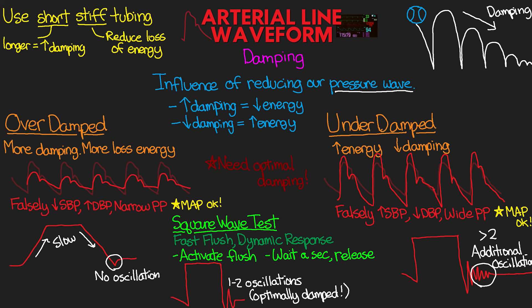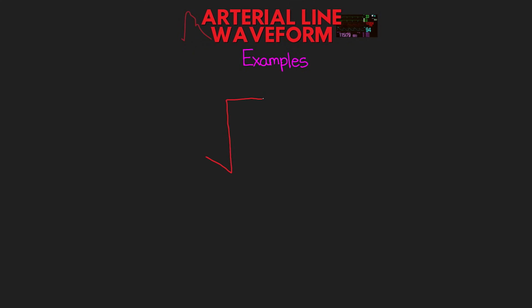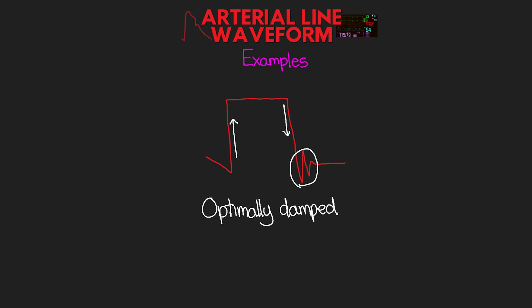The concept of overdamping and underdamping can get a little confusing, especially when trying to remember what one's flatter and what one's larger. Here is an example square wave test. If you perform this test on your patient and this was the result, what would you consider this to be? Hopefully you saw a quick upstroke, a quick downstroke, and just a couple of oscillations — this tells us that we actually have an optimally damped arterial line, meaning our arterial line is going to be giving us accurate numbers.